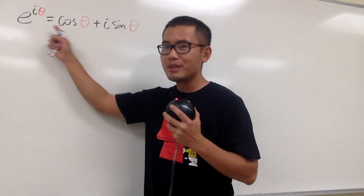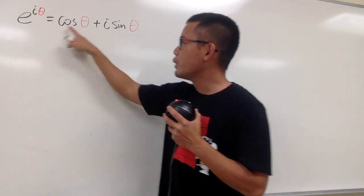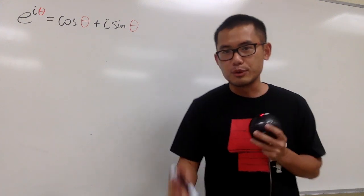Let's do some math for fun, and this is the Euler's formula, right? e to the iθ is equal to cosθ plus i sinθ, and this is what I'm going to do.